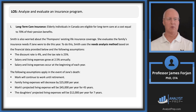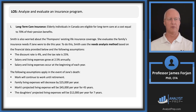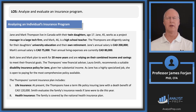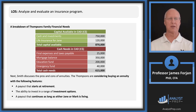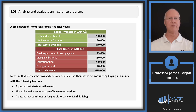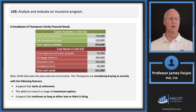Suppose Jane does pass away — Mark will continue to work. Family living expenses will decrease by $25,000 per year. Mark's living expenses will be $45,000 per year for 45 years, and the daughters' expenses will be $12,000 per year for seven years, meaning the girls are about 17 years old. From the table: life insurance of $120K plus cash and investments of $750K gives total capital available of $870K. Cash needs total $615,000, including mortgage balance and emergency funds.